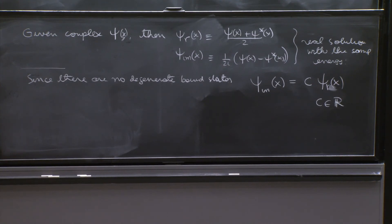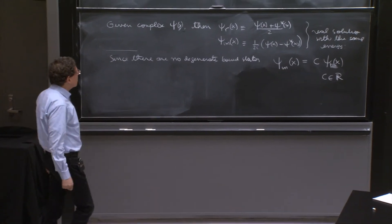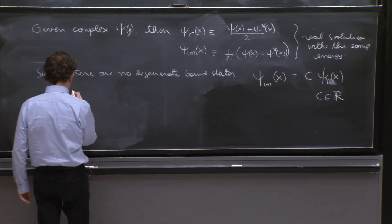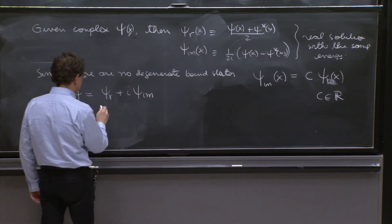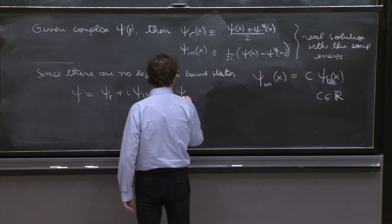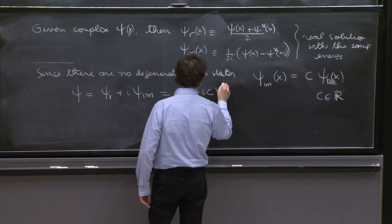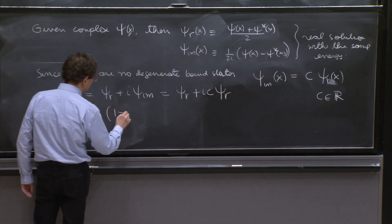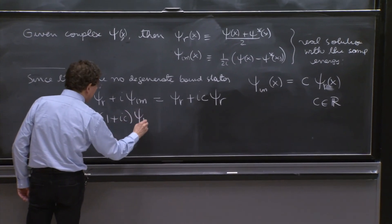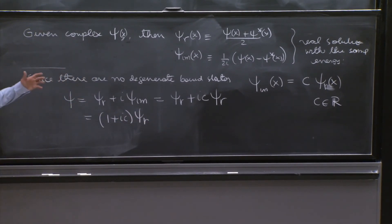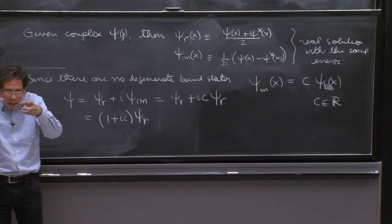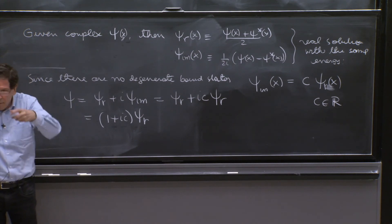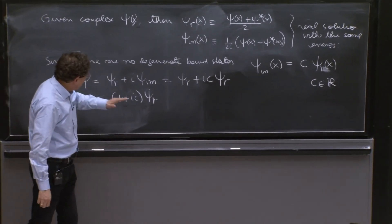So they cannot be degenerate. So if you start with a complex psi and you build these two, they must be the same solution, because since there are no degenerate bound states, then psi_imaginary must be proportional to psi_real. Both are real, so the only possibility is that they are equal up to a constant. You see, there cannot be a degenerate bound state, so the two tentative solutions must be the same. But that means the original solution psi, which is by definition the real part plus i times imaginary part, is now equal to psi_r plus i times c times psi_r again, which is (1 + ic) times psi_r.